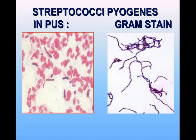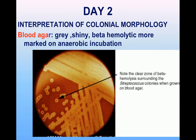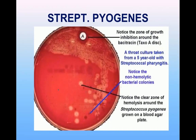On Day 2, gram staining shows large numbers of pus cells and gram-positive cocci in chains from the throat swab. On the blood agar plate, clear zones of beta hemolysis surround grey shiny beta hemolytic colonies. These grey shining colonies differ from Staph aureus, which are golden yellow, opaque, larger, and surrounded by a much larger zone of hemolysis.